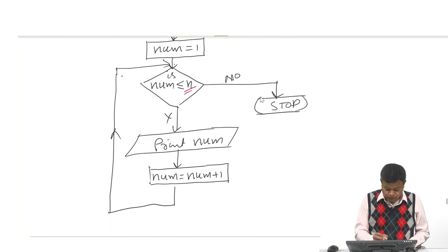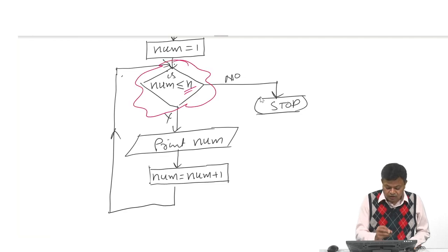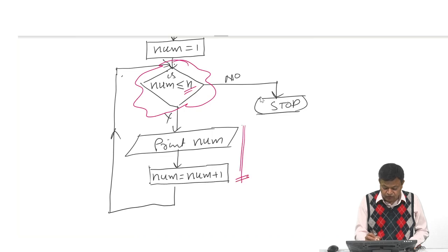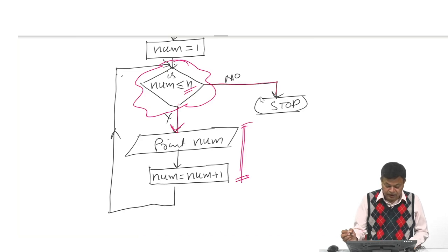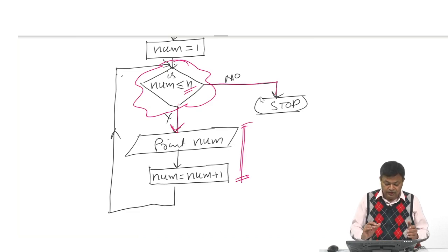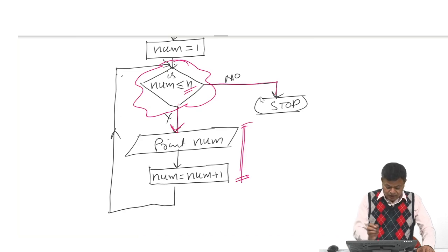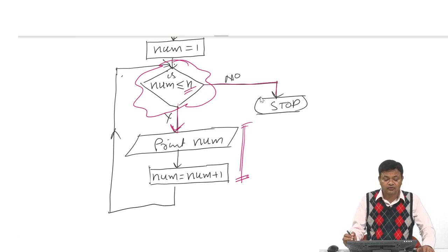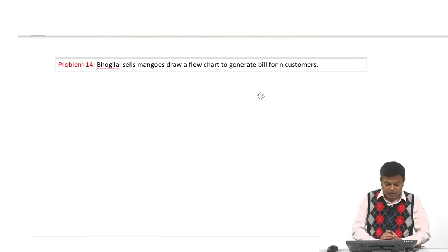If yes, I print the value of num; after that I update num. If no, work is done and I stop, going back up to the decision box. The difference from the previous problem is that before we printed up to 10; now we print up to N, where N is supplied by the user. So N times we will be printing the value of num through this loop. This is the controlling condition — if yes we go inside the loop, if no the loop terminates. If N is 100, this loop will execute 100 times, then num becomes 101 and we exit.